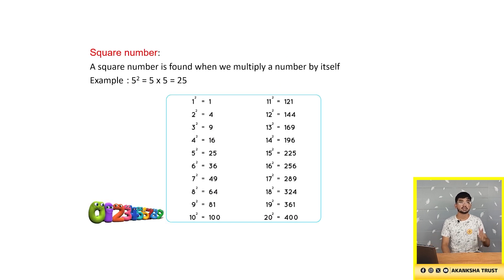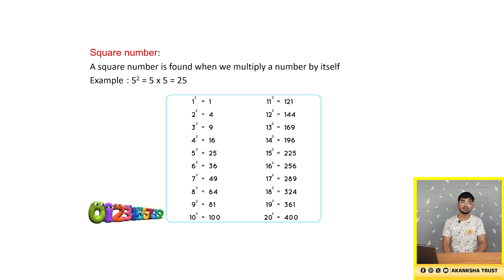Square number. A square number is found when we multiply a number by itself. For example, 5 squared is 5 into 5, which is 25. This is the list of the numbers from 1 to 20 whose squares are given.